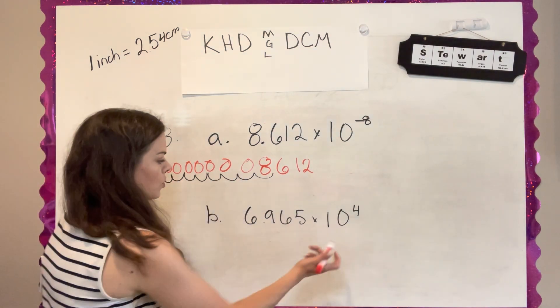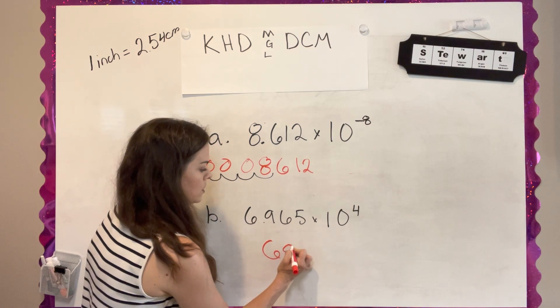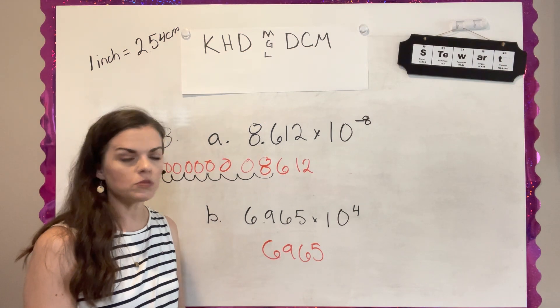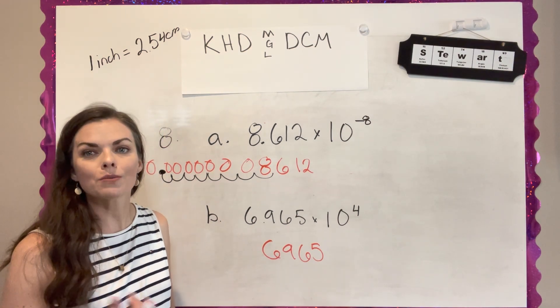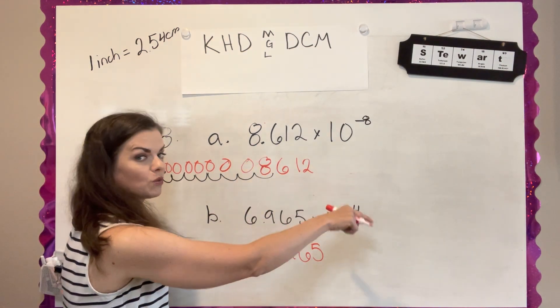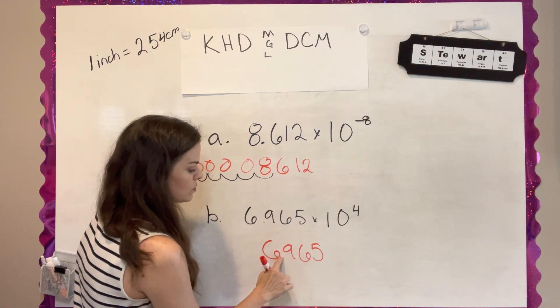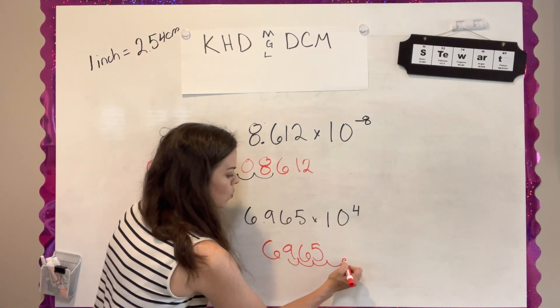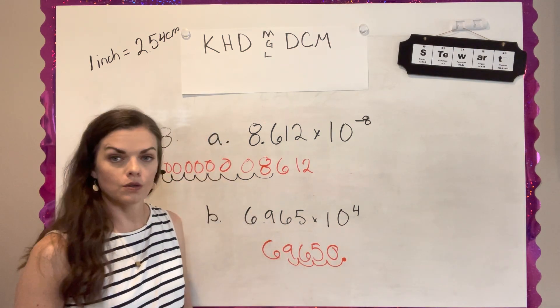So for this number, I'm going to do the same. I'm going to write my number down. And I'm going to move my decimal four times. But I know it's a big number because it's a positive exponent. So I'm going to move my decimal that way four times. So it was here. So it's like 1, 2, 3, 4. So I'm going to put it there and fill in with zeros.